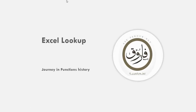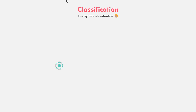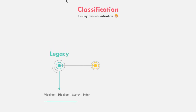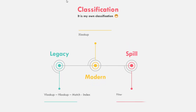In this lesson we are going to learn about the Excel lookup history view. I will classify them into three categories: the legacy or old ones, which include VLOOKUP, HLOOKUP, MATCH, and INDEX, and many more; the modern XLOOKUP; and FILTER, which is the only spill lookup formula. If you know how to use XLOOKUP, you don't need any of the legacy functions — VLOOKUP, HLOOKUP, MATCH, or INDEX.